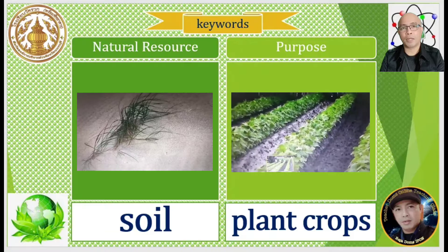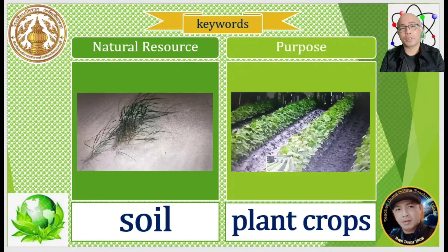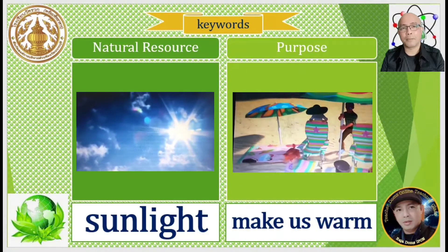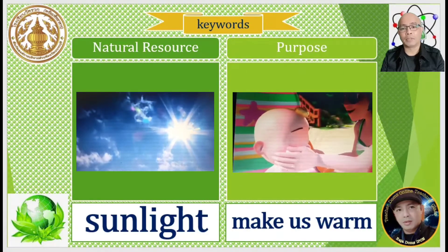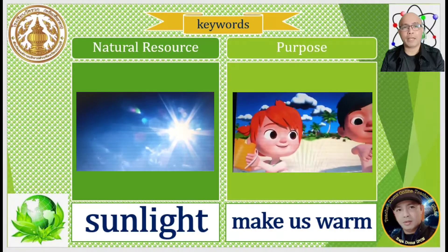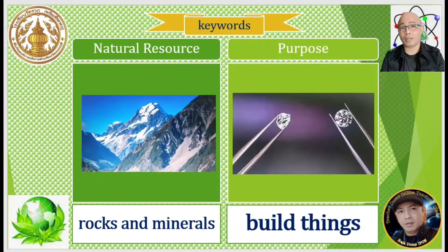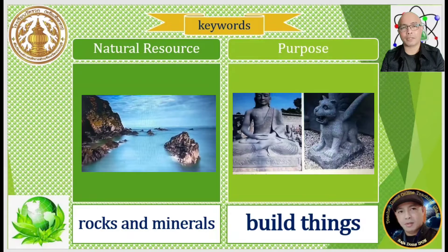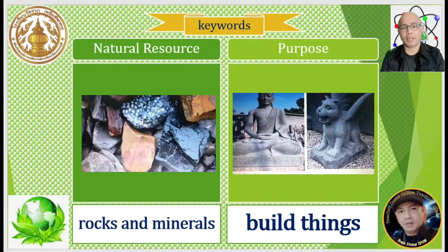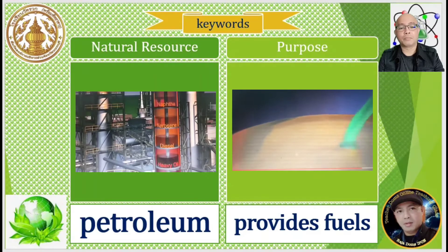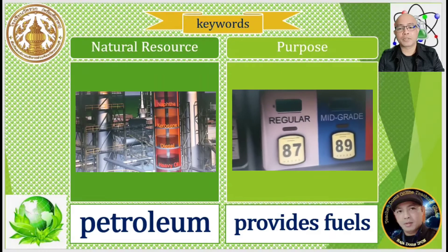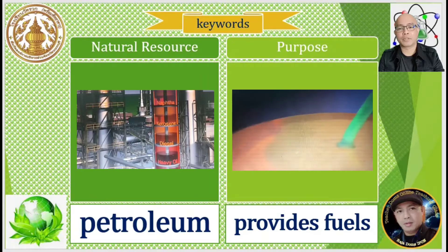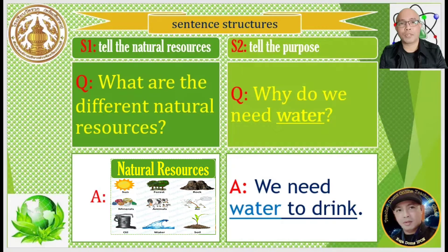More keywords: Soil — we plant crops in soil. Sunlight — sunlight makes us warm. Rocks and Minerals — we use rocks and minerals to build things. Petroleum — petroleum provides fuels.